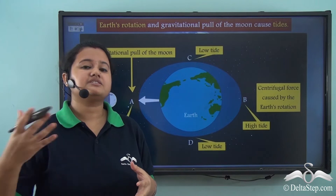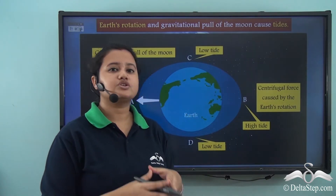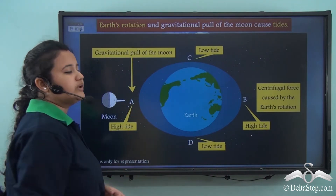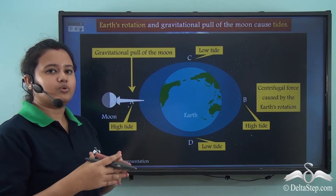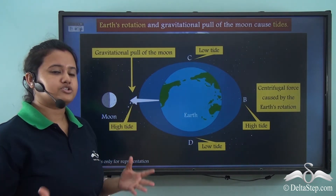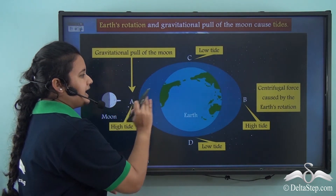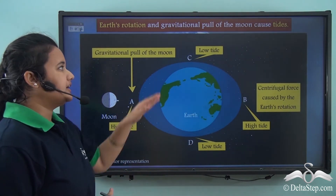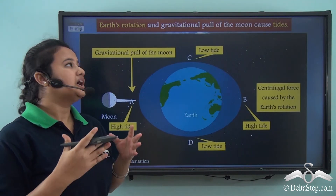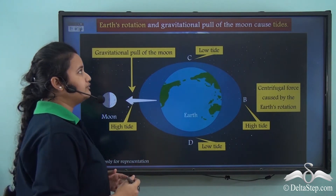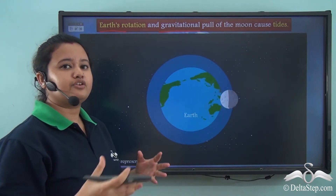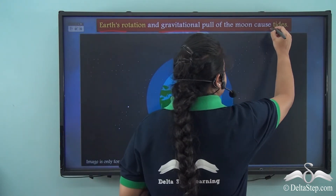Here we experience another high tide at point B due to centrifugal force caused by earth's rotation. Now at points C and D we can observe a decrease in water level. This happens because most of the water accumulates at points A and B where we have high tide. So at points C and D we observe a decrease in water level, which is known as low tide. So apart from the gravitational pull of the moon, earth's rotation is also another factor behind the formation of tides.